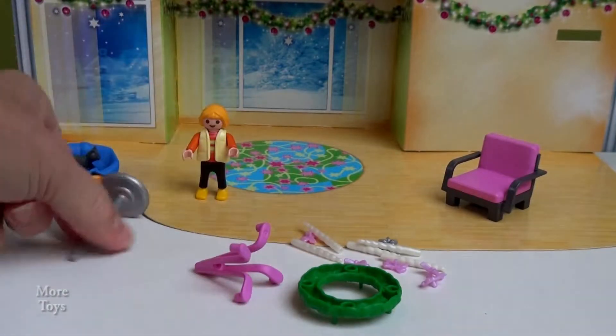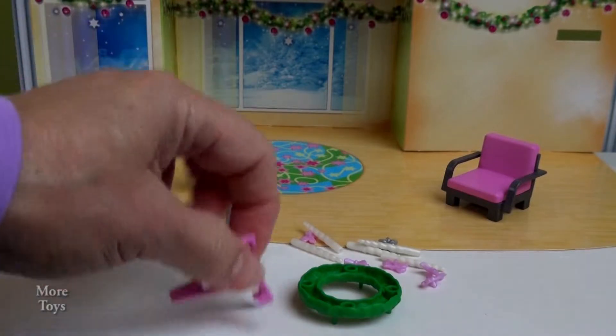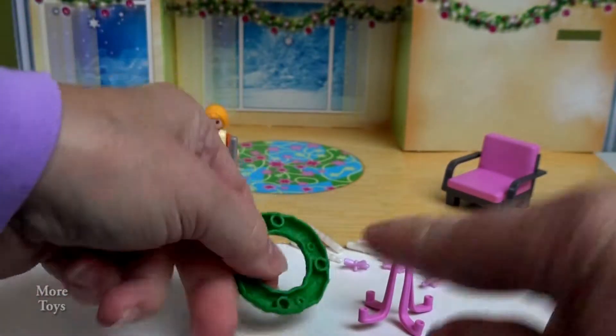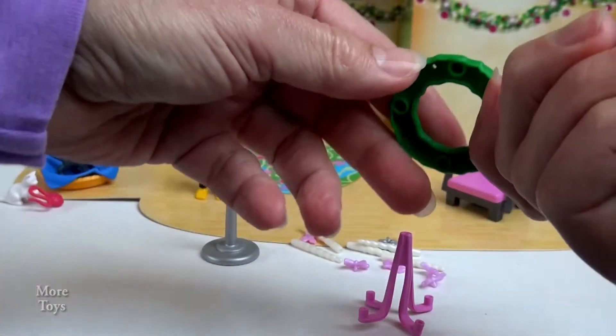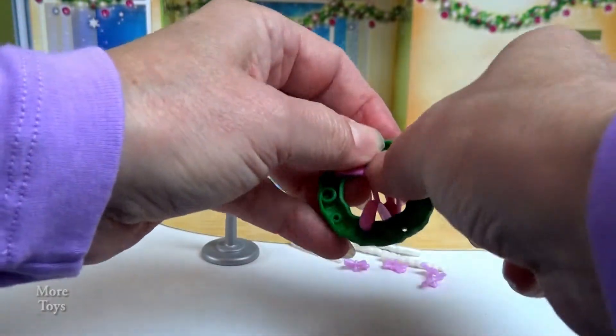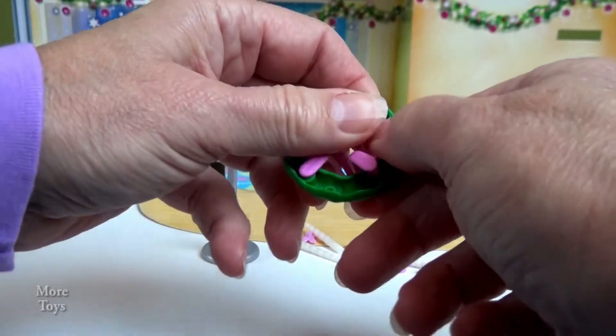Okay, so we have the wreath, we have this cute stand, and what it is, is this thing has circles on it, and the bottom of the wreath has circles, and they're going to match up. And stick together. So, each one of these sticks goes in each one of these circles.